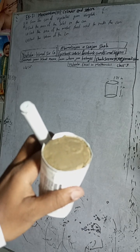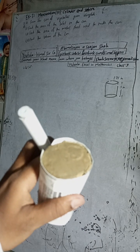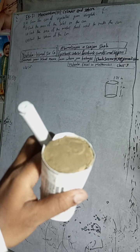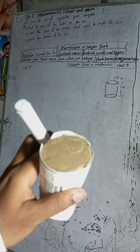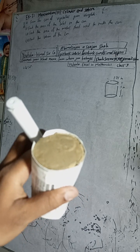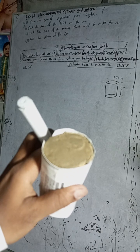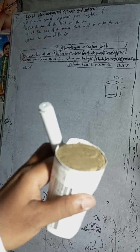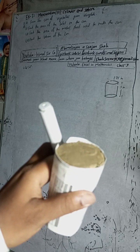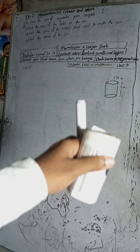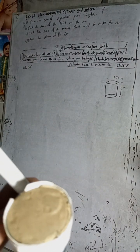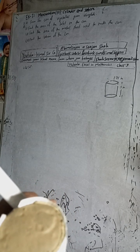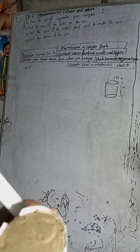Hi class 9 and 10 students, welcome back to Bimal Sir's YouTube channel. This is question number 4b, exercise 7.1, mensuration third part - cylinder and sphere - Excel in Mathematics class 9. The question 4b is from the can of vegetables given alongside. I figured out that 1.75 is the radius, not the diameter.